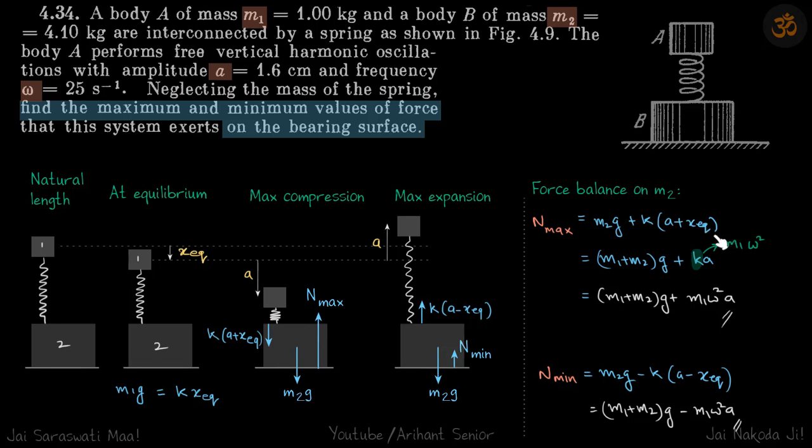k is not given, but they have given omega and we know m1, so k will be m1 omega squared, because omega equals root k by m. From here we'll get our answers, and similarly we'll get N_min also.